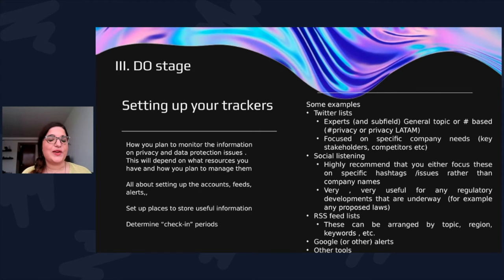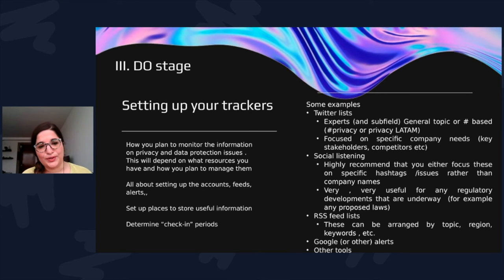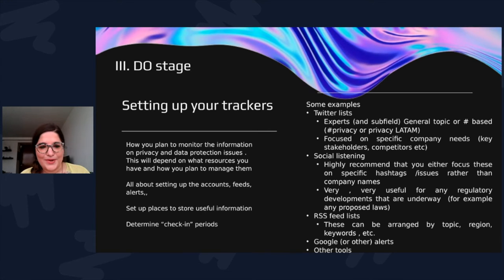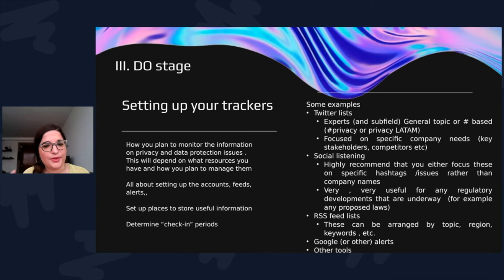Now you get to the meat of it: setting up the trackers. I like having two to three places where you're going to follow information. You can do more, but I wouldn't do more than five because it gets chaotic. I've lately found Twitter lists to be super useful. Social listening tools are also useful, especially if you're not sure who's doing the talking on your keywords — just plug in your keywords as hashtags, follow them for a while, and see who comes up. And there are RSS feeds, which I personally love, as well as Google Alerts, newsletter subscriptions, and platforms like Medium.